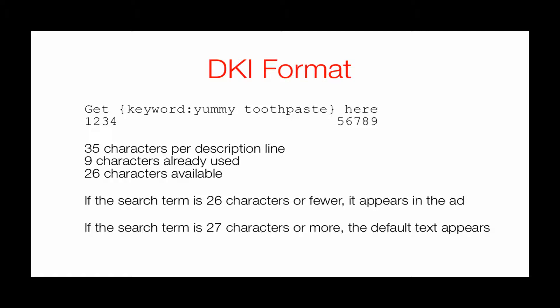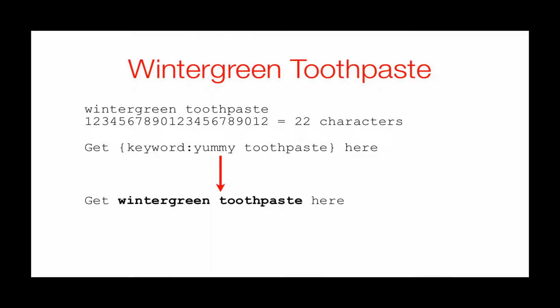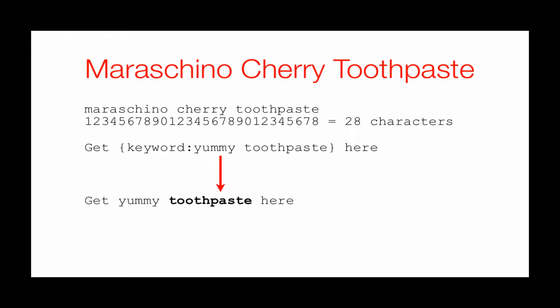For example: caramel toothpaste, wintergreen toothpaste, chocolate toothpaste. But if the search term is more than 26 characters — like maraschino cherry toothpaste — the default ad appears. So 'wintergreen toothpaste' at 22 characters turns into 'get wintergreen toothpaste here,' and it's bolded because the keyword is always bolded in the ad text. But 'maraschino cherry toothpaste' at 28 characters is too much, so it turns into 'get yummy toothpaste here.'